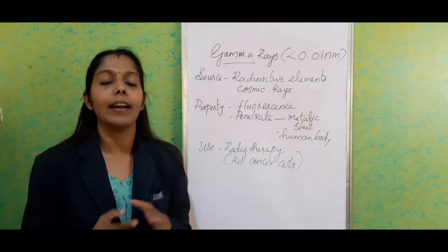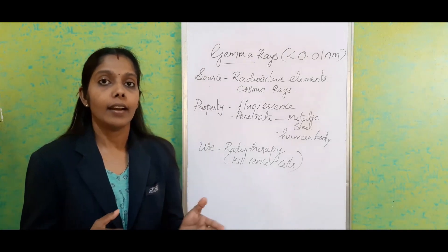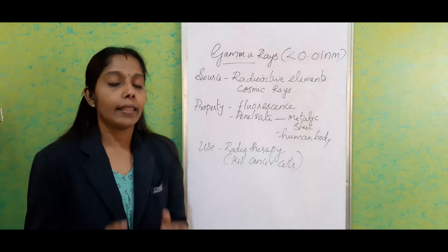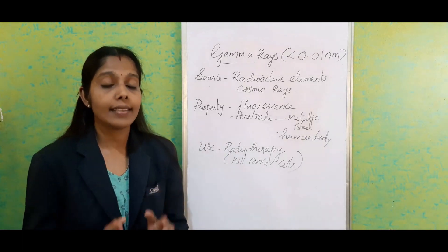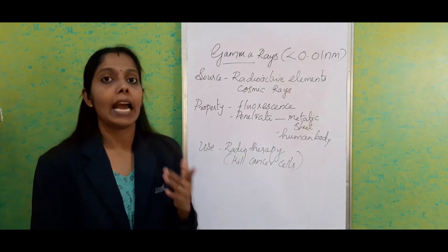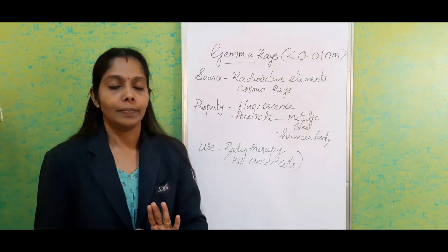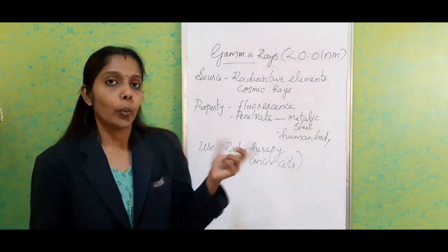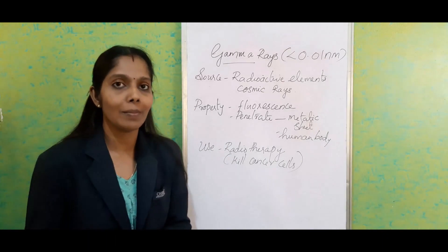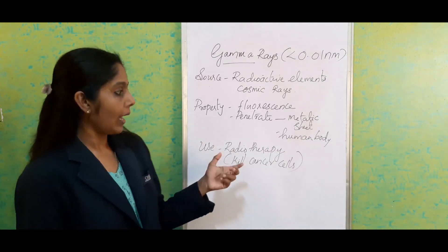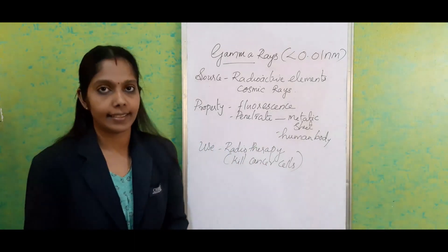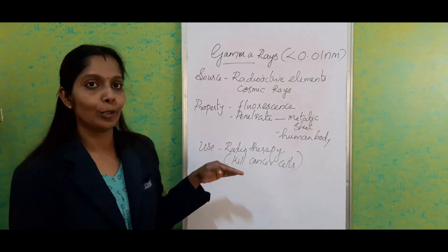What are the properties of gamma rays? Gamma rays show fluorescence in zinc sulfide. The most important property is that they have the ability to penetrate through thick metal, and even through the human body. We utilize that property for radiotherapy — meaning the killing of cancerous cells. So these are the properties, source, and use of gamma rays.